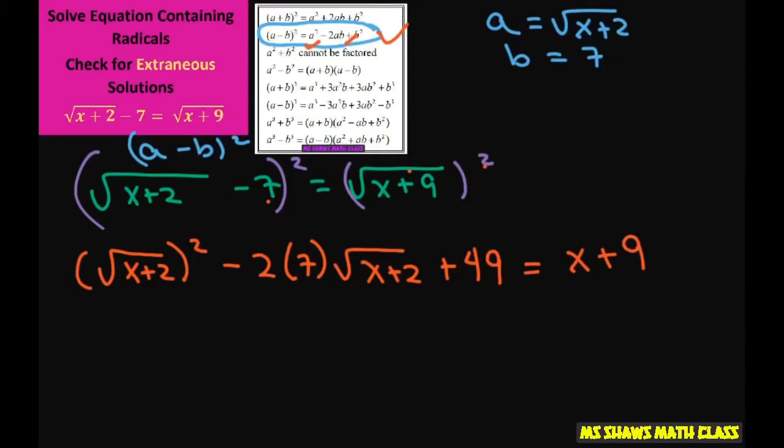So when you square this you're going to get x plus 2 minus 14 square root of x plus 2 plus 49 equals x plus 9.